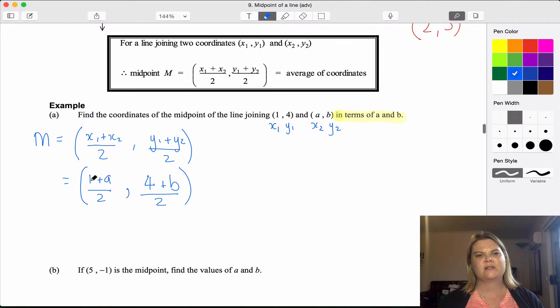Y1 is 4 and y2 is b: 4 plus b over 2. And I'd be looking at this to see if I can simplify any of this. It does say in terms of a and b, and my solution has got a's and b's in it. You could rewrite parts of this, you could do 4 divided by 2, but it's not really necessary. I would be tempted to just leave it like this.